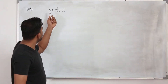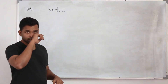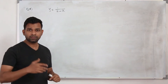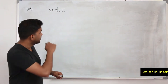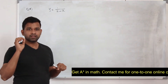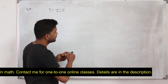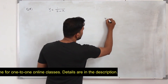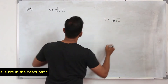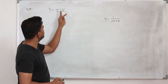You are given the equation y equals 1 upon 2 minus x. It's a reciprocal graph. We learned how to sketch a reciprocal graph in chapter 4 on graphs and transformations. But this question is a little bit tricky because you have y equals 1 upon minus x plus 2, and then you flip them.